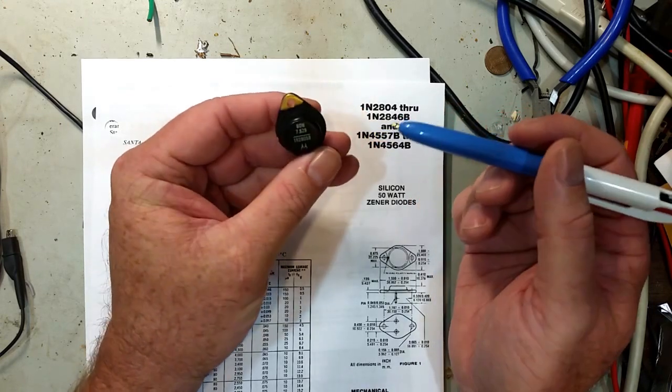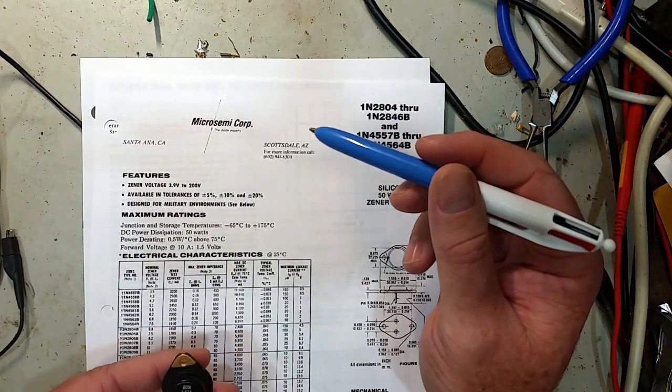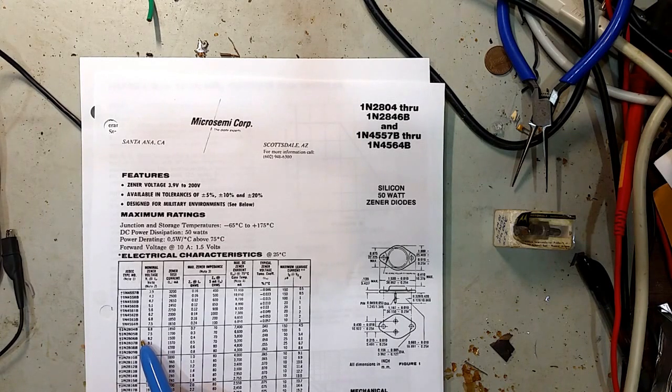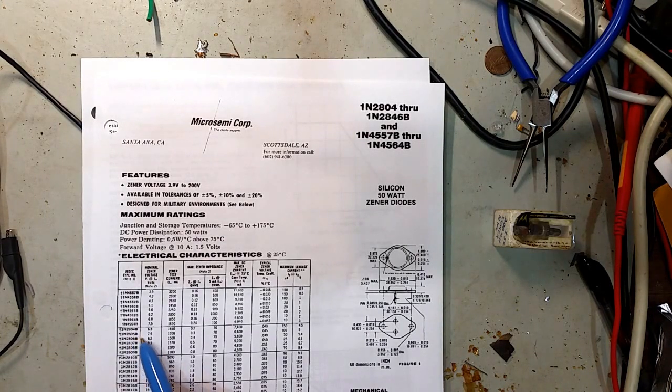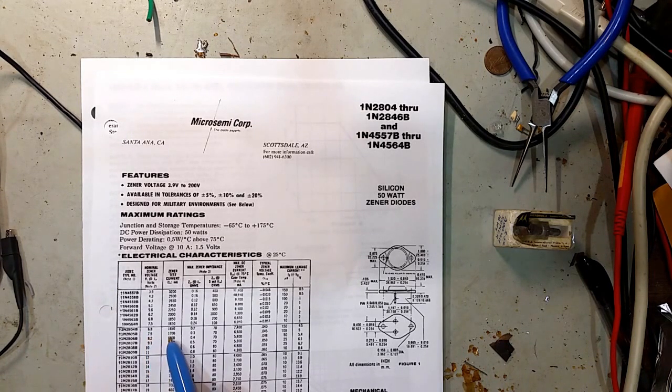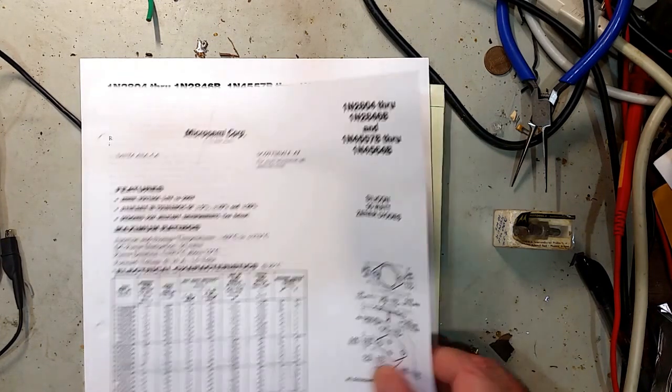Actually, when we start talking a little bit about what this might have been used for, it'll make sense why Motorola might have made something like this. So I was able to find a datasheet, and for the 2805B it's rated Zener voltage of 7.5 volts, that's tested at 1.7 amps, and it's capable of carrying 6.6 amps of current.